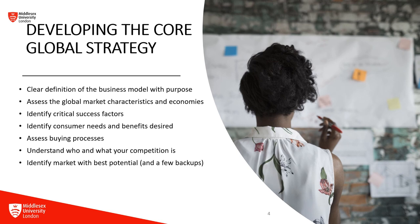The first step in developing a core global strategy is to clearly define the business model with purpose, articulating the organization's mission, values and long-term objectives in the context of global expansion. It's essential to define the value proposition, competitive advantage and strategic intent that differentiate the organization in the global marketplace. The second aspect is to assess the global market characteristics and economies, analyzing factors such as market size, growth trends, demographics, socioeconomic conditions, political stability and regulatory environments across target markets. Understanding variations in consumer behavior, purchasing power, cultural preferences and trade barriers helps inform market entry strategies and resource allocation decisions.